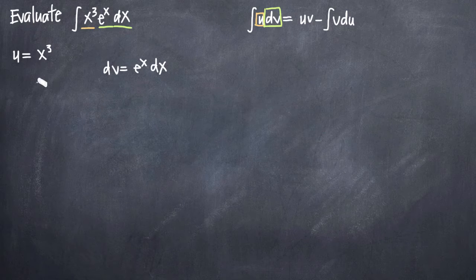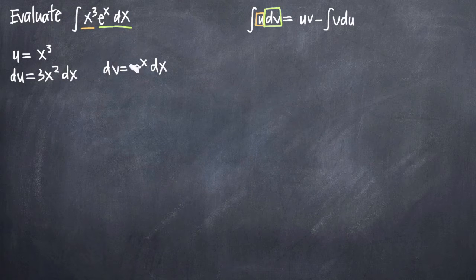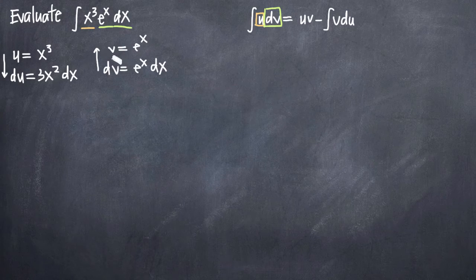Now that we've identified these two pieces, we need to take the derivative of u to get du. The derivative of x cubed is 3x squared, and it's important to add a dx since we took the derivative. We're going to take the integral of dv to find v, and the integral of e to the x is simply e to the x. So with u you're taking the derivative, and with dv you're taking the integral. Now that we have those four components, we can plug them into our integration by parts formula.